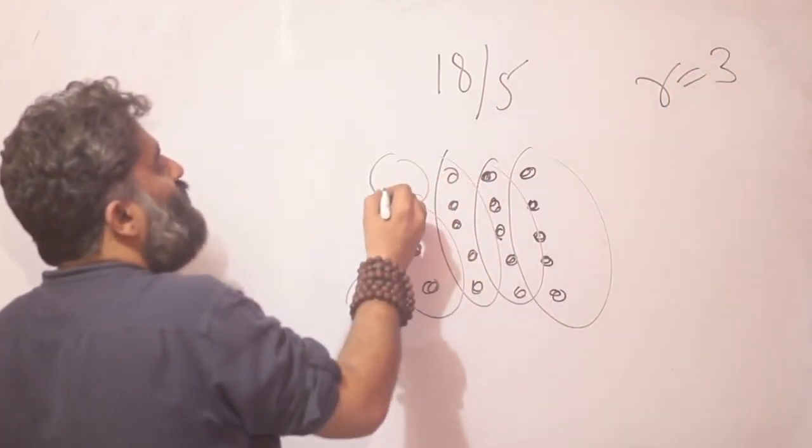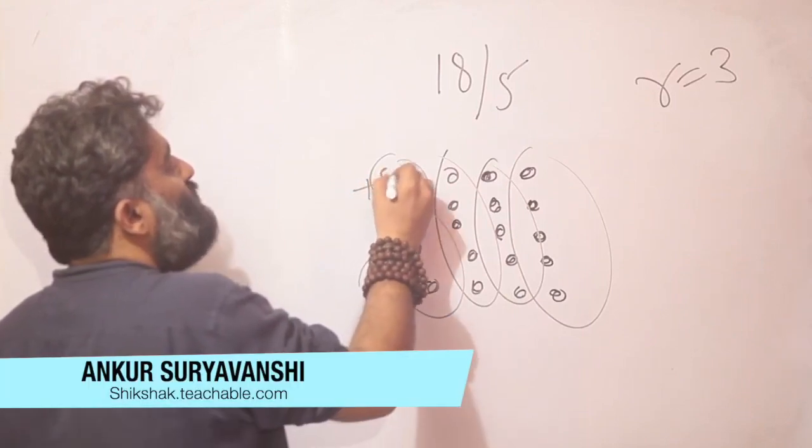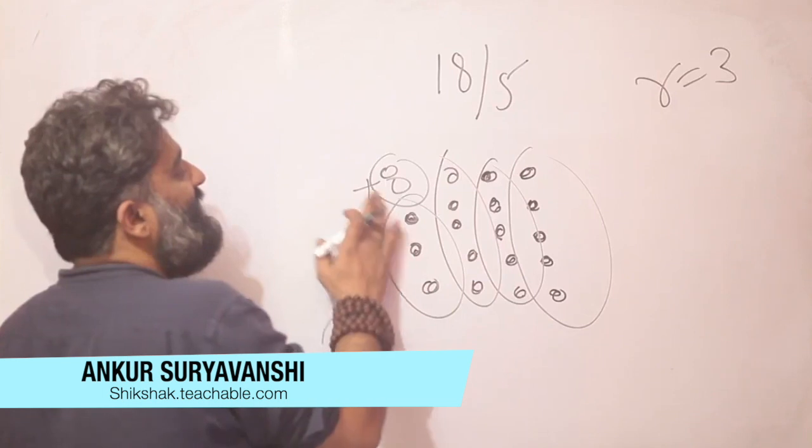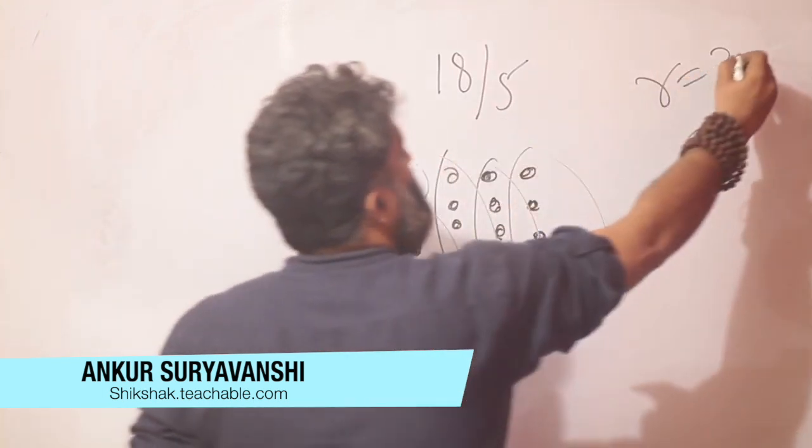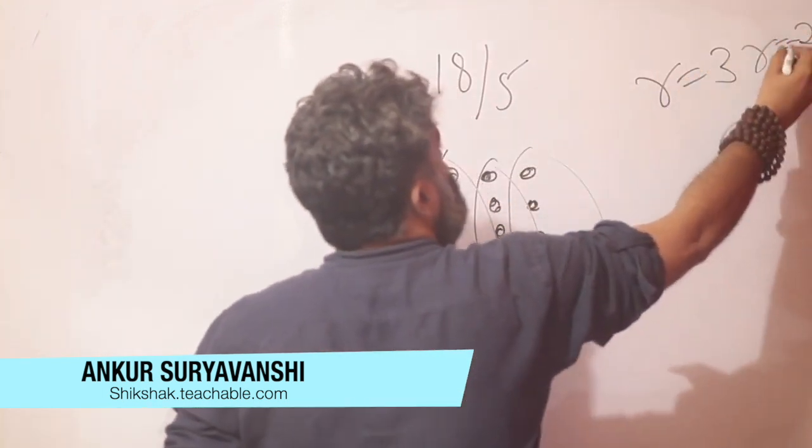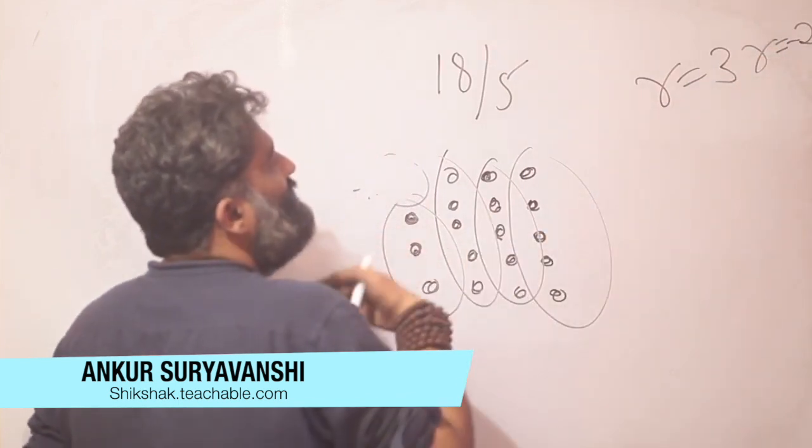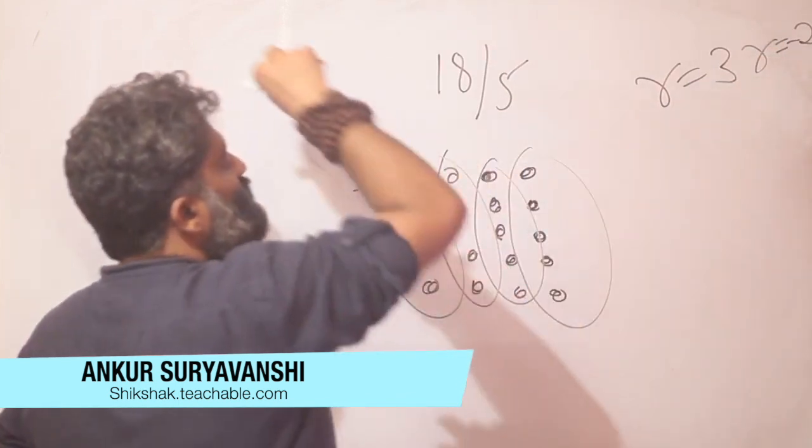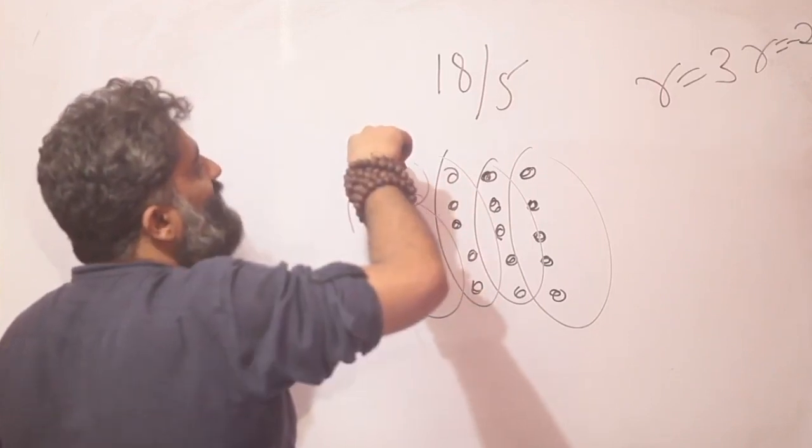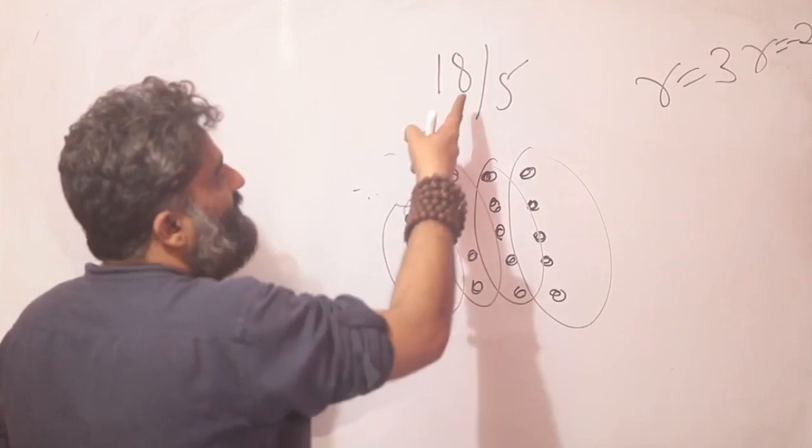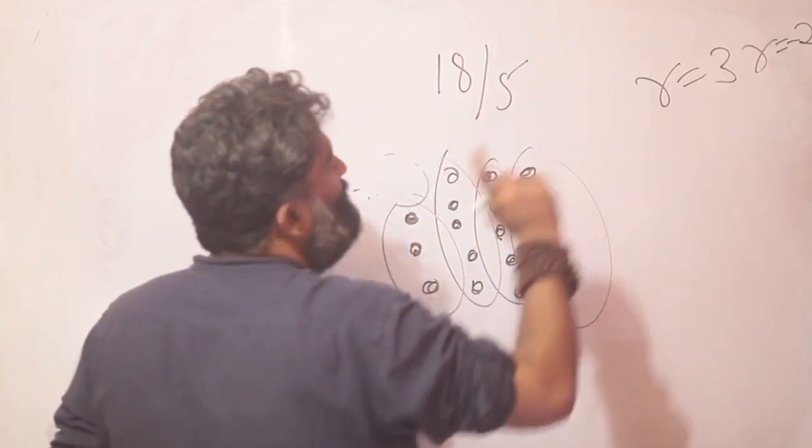Or once again if you want to visualize, if you add 2 more toffees, you will get to the next multiple of 5 which is 20. So you can also say the remainder is minus 2. Why minus 2? Because when you were removing the toffees, you were calling it positive 3. So the opposite of that is trying to add the toffees and therefore the minus 2. So if I go for 18, my remainder would be 3.